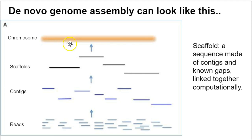Scaffold is a new word here. A scaffold is a sequence that is made of contigs and known gaps, linked together computationally. To be honest, we won't really use that phrase much in our classroom setting — we're mostly just going to focus on getting contigs.